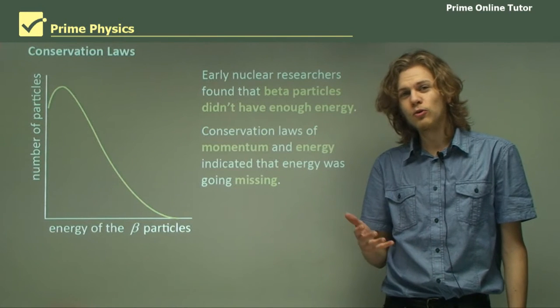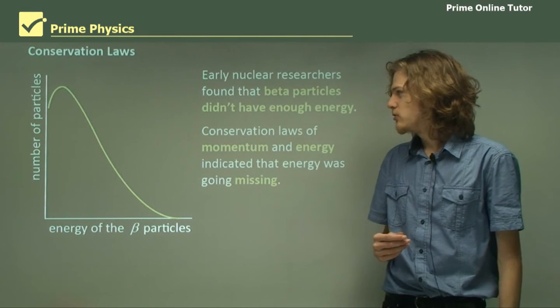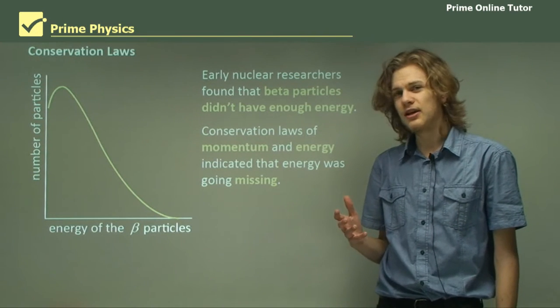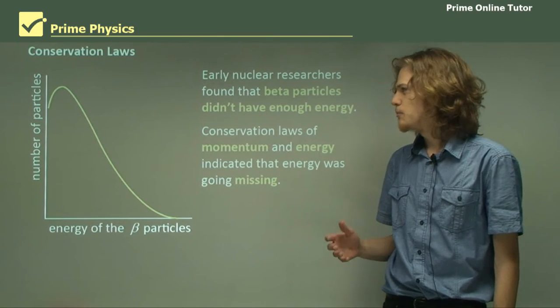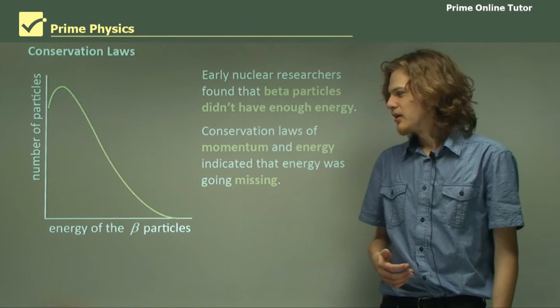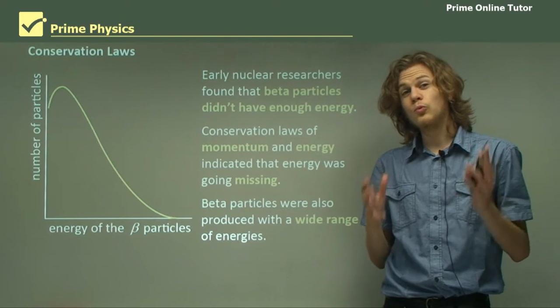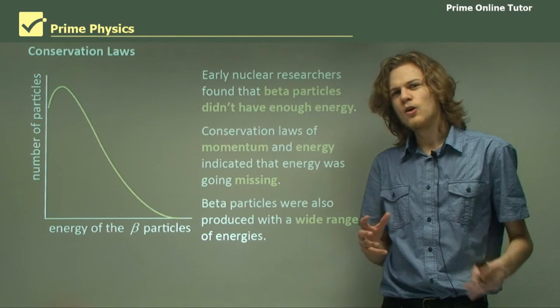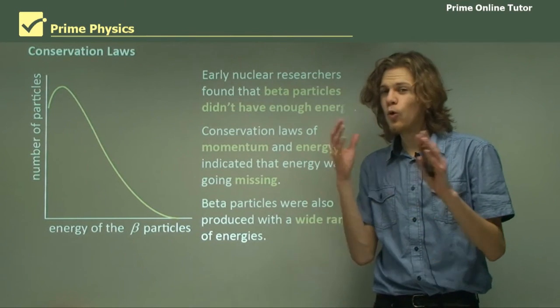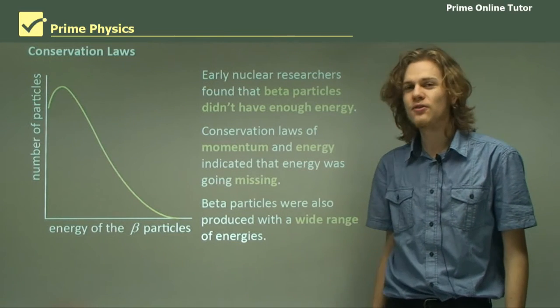You can detect the energy of a beta particle by putting it through an electric or magnetic field. If you do that, you'll end up with a curve like this, which shows us that most of the beta particles don't have very much energy. Most have quite low energy, but a few have larger amounts. Beta particles were produced with a wide range of energies, which shouldn't happen according to the theory of beta decay.